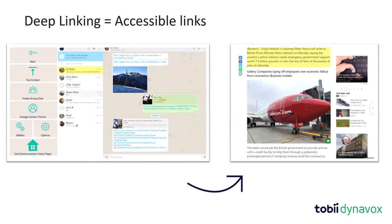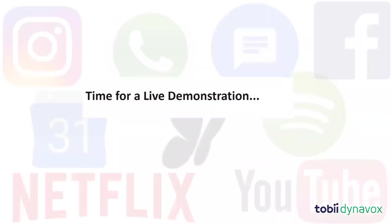The system determines what content is being presented and dynamically changes the page set on the left so you have all the correct buttons to interact with it. If you're presented with a video, you get play and pause. If you're presented with a photo gallery, you get options to navigate through it. The other really cool feature is deep linking — when you're in WhatsApp or Facebook Messenger and someone sends you a YouTube link, the system jumps from one page set to another to let you control that content.